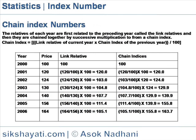Chain Index Number. Chain Index Number is used in changing conditions like changing base. The relatives of each year are first related to the preceding year, called the link relatives, and then they are chained together by successive multiplication to form a chain index.